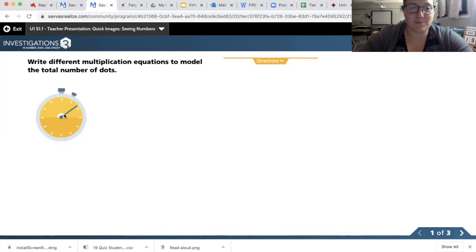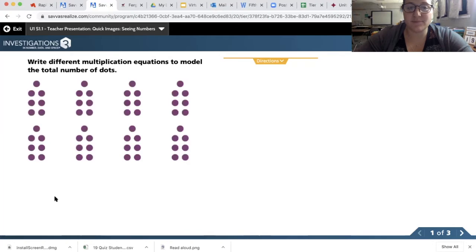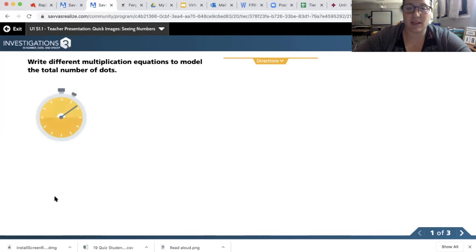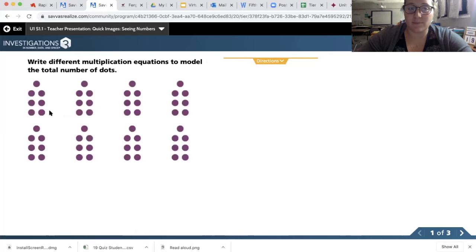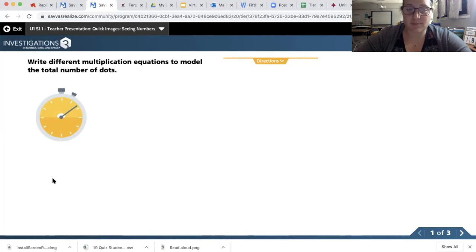So here's the first one. As I said, it's quick. So take think about what you saw, double check that that's still what you saw this time, and then focus on the question. Write different multiplication equations to model the total number of dots. Write those equations now.